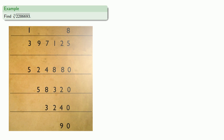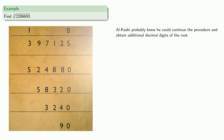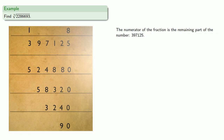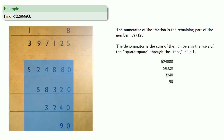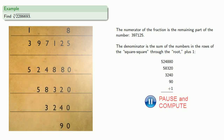And so our fifth root so far is 18. Al-Kashi probably knew that he could continue the procedure to obtain additional decimal digits of the root. Instead, he approximated the fractional part as follows: the numerator of the fraction is the remaining part of the number, and for the denominator, Al-Kashi took the sum of the numbers in the rows of the square square through the root, plus one. And so our fifth root is approximately that value.